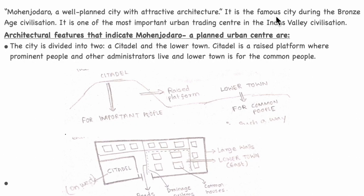Mohenjo-daro is a famous city of the Bronze Age civilization and one of the most important urban trading centers in the Indus Valley Civilization. The architectural features that indicate it was a planned urban center include the following.